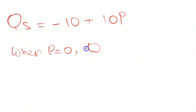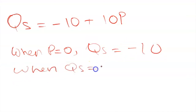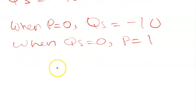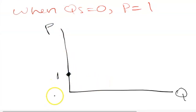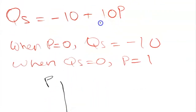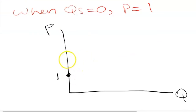Let's look at another example: quantity supplied equals negative 10 plus 10p. When price equals 0, quantity supplied is negative 10, and when quantity supplied equals 0, price is 1. So we have the point (0, 1). The slope is 10, so when price is one unit higher quantity supplied is 10 units higher, giving us a second point at (10, 2). Now we've plotted this supply curve.